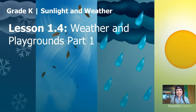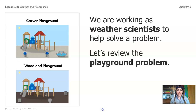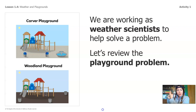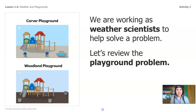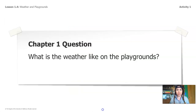Are you ready to do some investigating? Great, let's go. Do you remember the last lesson you did with Ms. Diaz? Remember that we're working as weather scientists to help solve a problem. Look at these pictures — one shows Carver Playground and one shows Woodland Playground. Let's review the playground problem. Do you remember the letters that the principals sent us about the different temperatures on their different playgrounds? We're going to do some investigation today to see if we can answer the Chapter 1 question: what is the weather like on the playgrounds? So we are trying to describe the weather so that we can help solve the playground problem that the principals are having.